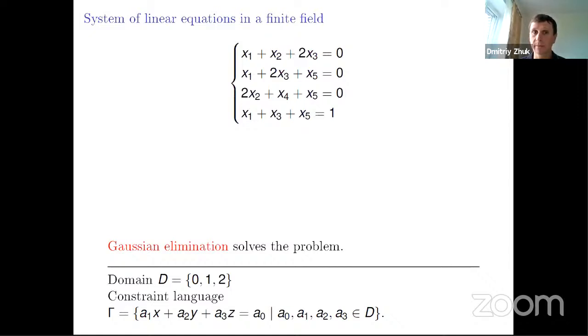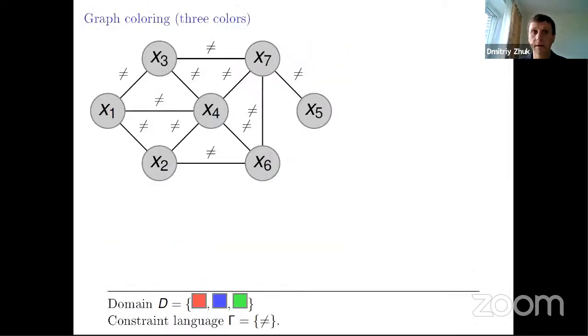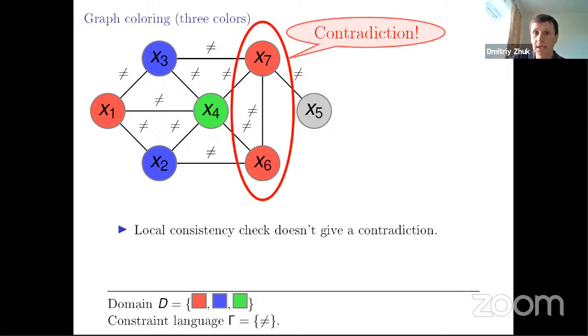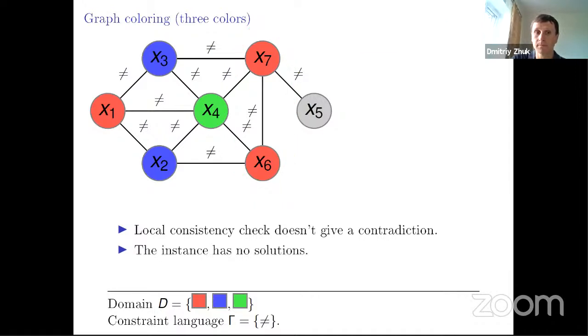Again, let's try to solve this problem by local consistency check. We cannot get a contradiction using local consistency check, but also we can check that this concrete instance doesn't have a solution. And actually we can prove that this problem is NP hard. So we strongly believe that this problem cannot be solved in polynomial time. The main question is to distinguish between easy cases and difficult cases, and also to prove that we don't have anything else.